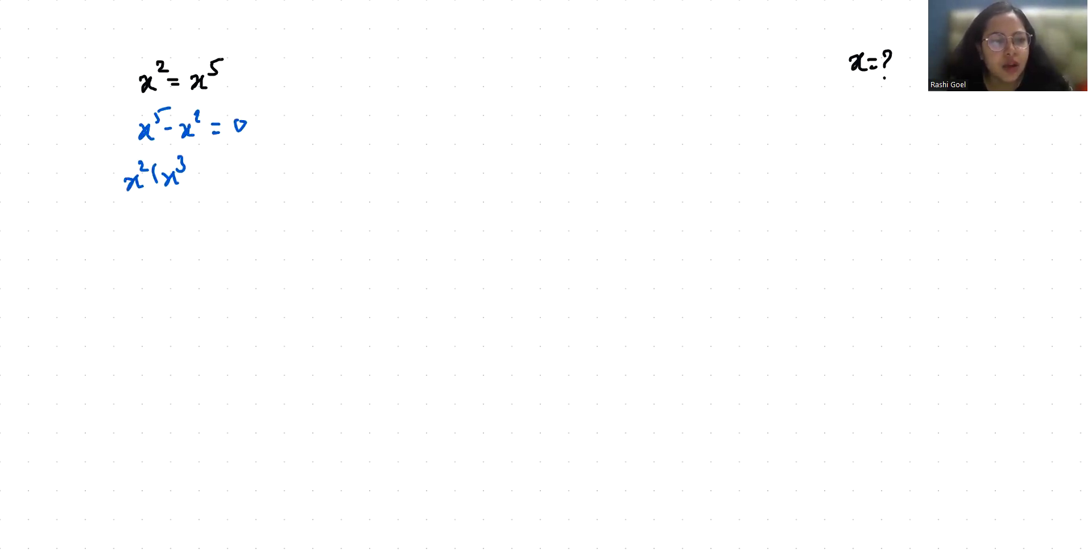So two roots: x squared equals 0, x equals 0, so x1 is 0 and x2 is also 0.